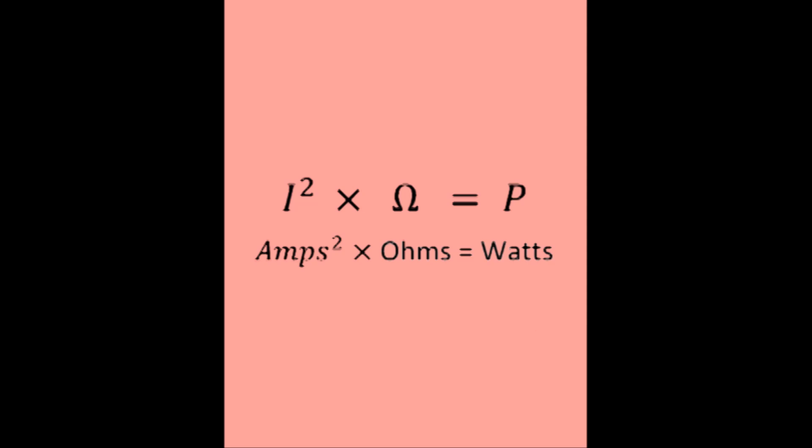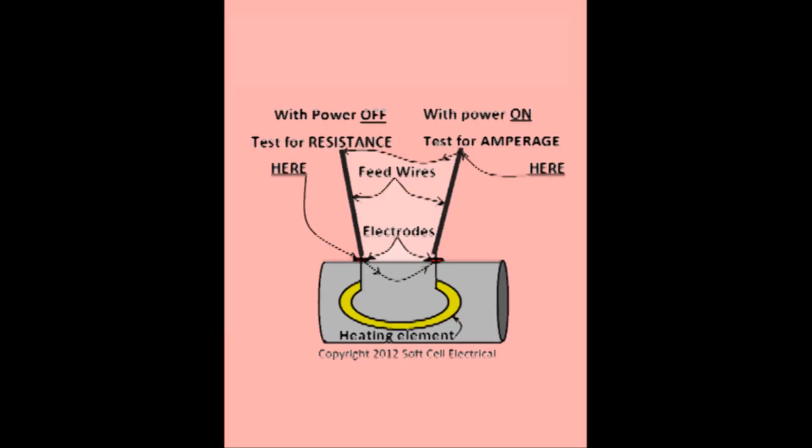This formula is particularly good for testing heaters or other high-resistance devices. For this lesson, we are going to look at an inline heater that is a standard item for hot tubs or jacuzzis. Looking at the diagram, you can see the feed wires, the electrodes, and the heating tube with the heating element inside.